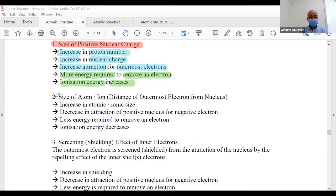The second factor is size of the atom or ion, also commonly known as the distance of the valence shell or outermost shell from the nucleus.